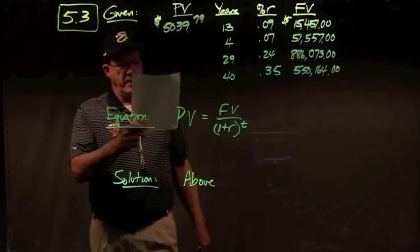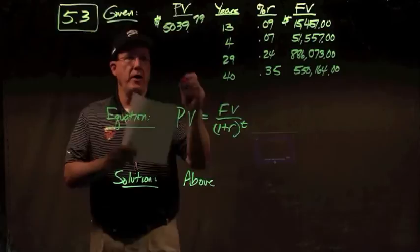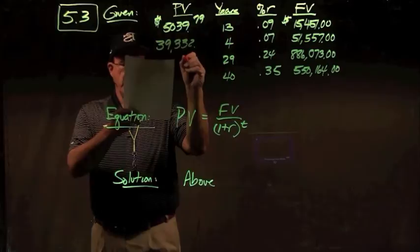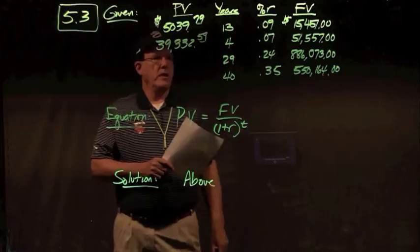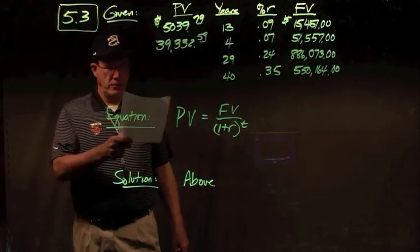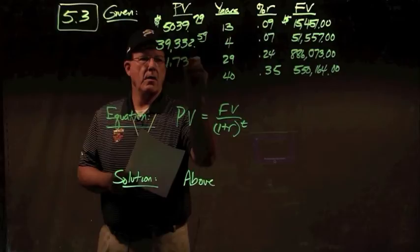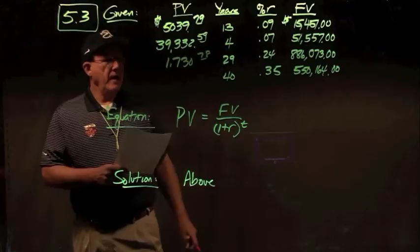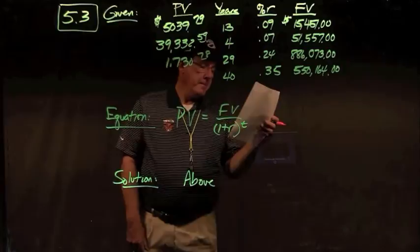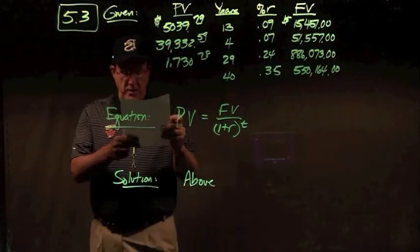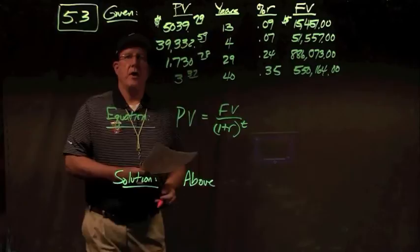Second case: $51,557 divided by 1.07 to the 4th power gives $39,332.59. Third case: $886,073 divided by 1.24 to the 99th power gives $1,730.78. Fourth case: $550,164 divided by 1.35 to the 40th power gives $3.37. Those are your answers to problem 5.3.